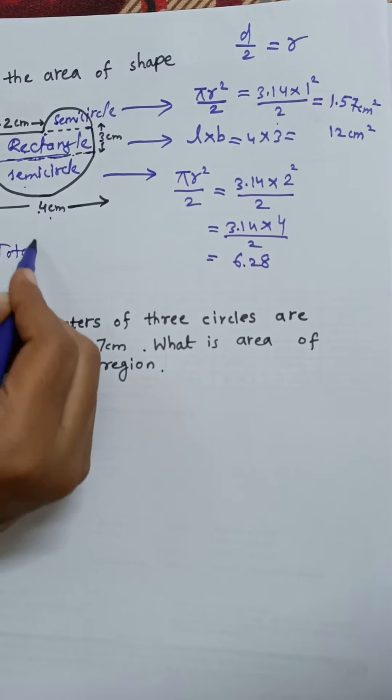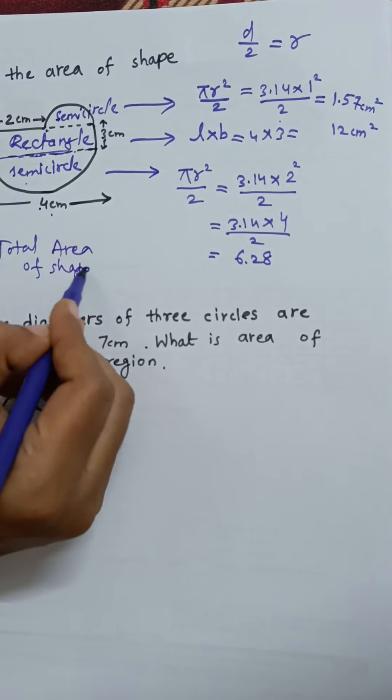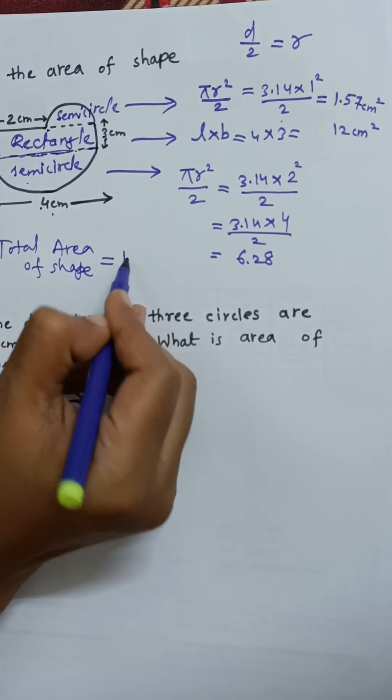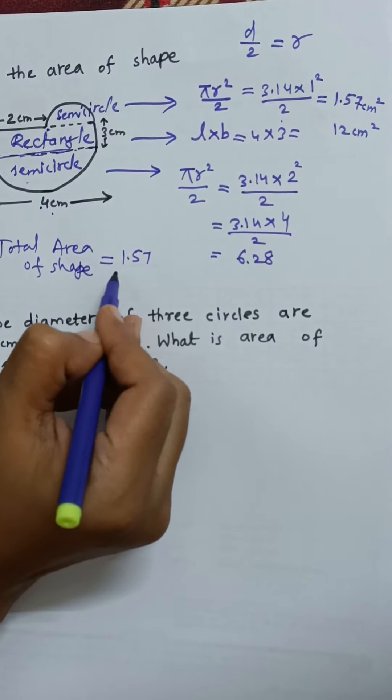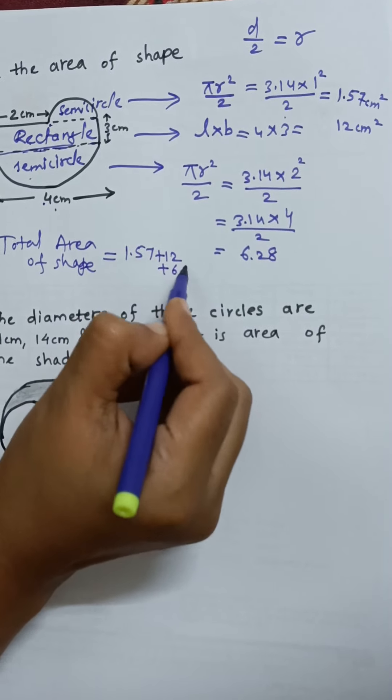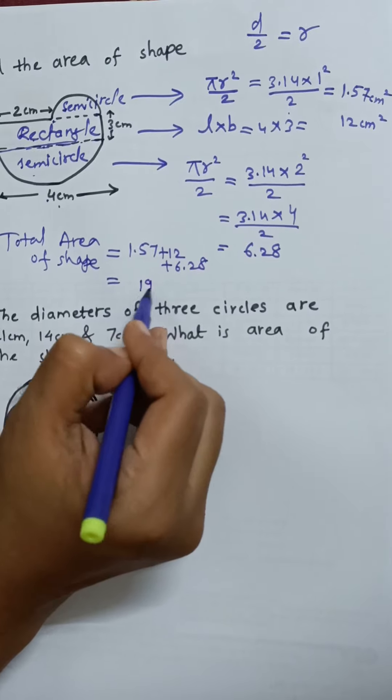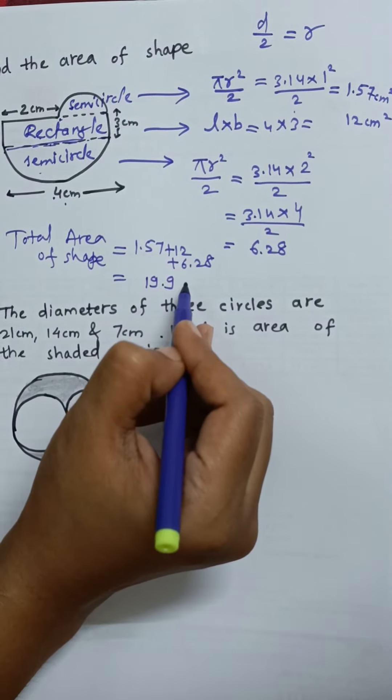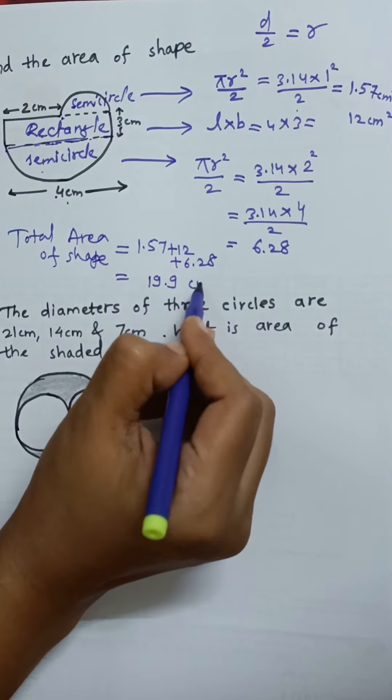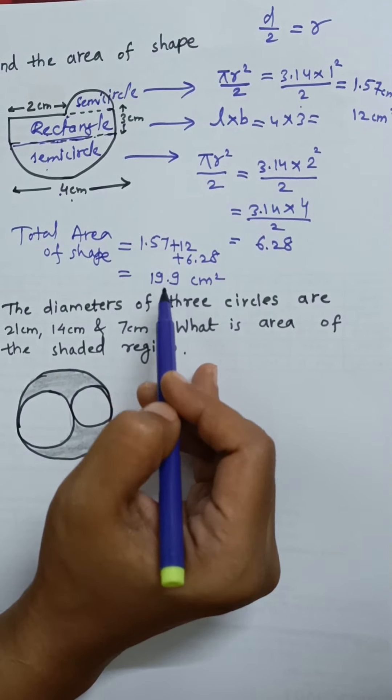Total area of the shape is nothing but the sum of these three values. 1.57 plus 12 plus 6.28. Overall you will receive 19.9 as area of the whole shape up to one decimal place.